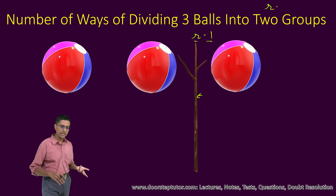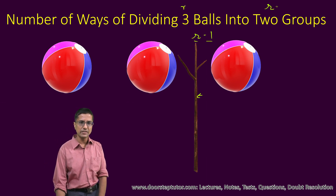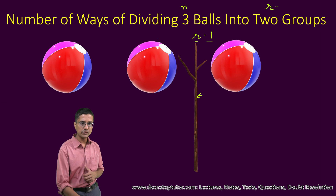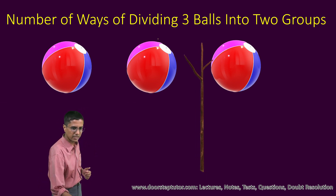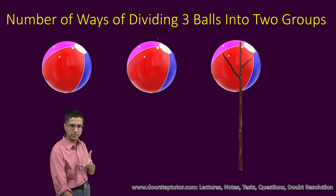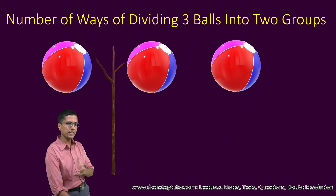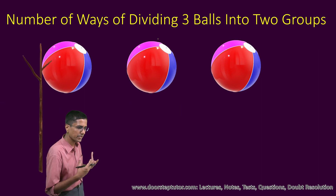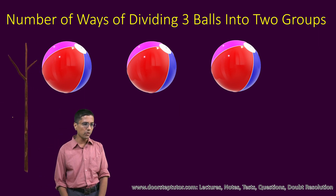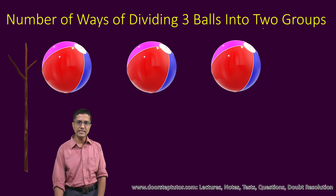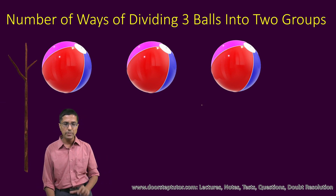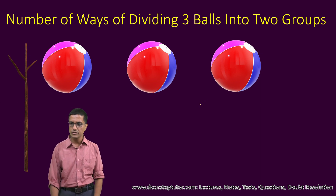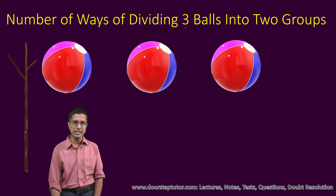Of course we have n things, so those n things come into play. The separator can be in the middle — that's one arrangement. It could be here — that's another arrangement. And so on. So my problem of dividing these three balls into two groups has now been reduced: it has become a problem of arranging these four things — that is n balls plus r minus one separators.